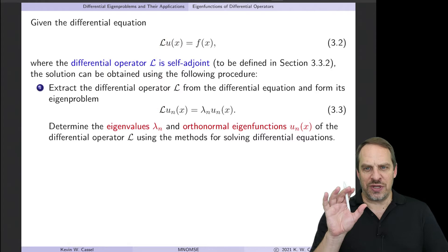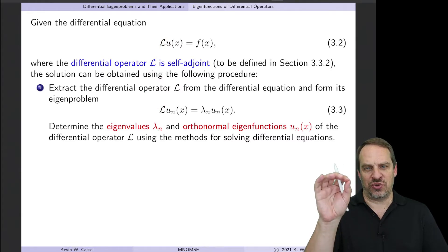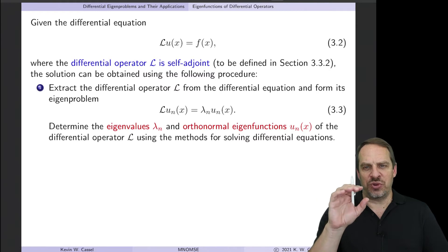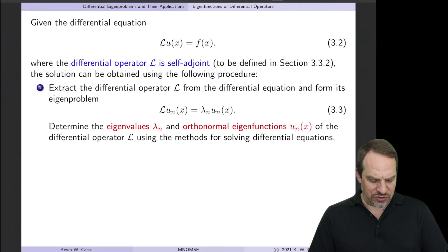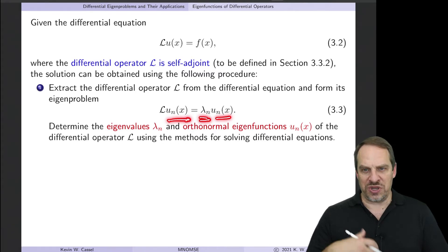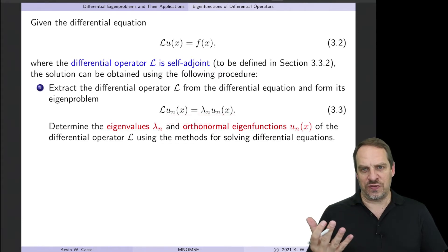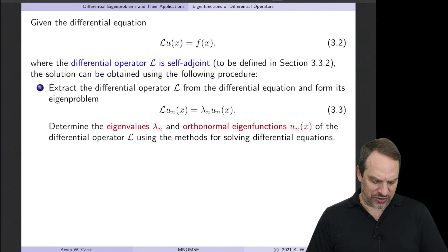So remember, the eigenproblem itself is a differential equation, but it's not the original differential equation we want to solve. It's determined from the differential operator from the original equation. So we have L U sub n is equal to lambda sub n U sub n. So that's our differential eigenproblem. And we'll solve that to get the eigenvalues as well as the eigenfunctions of our differential operator. There'll be an infinity of them because it's an infinite dimensional function space.